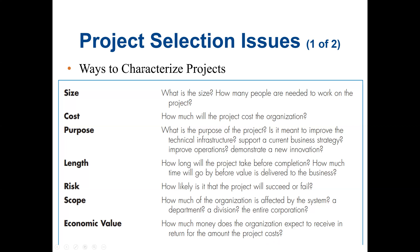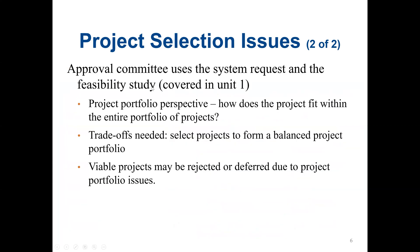Project selection issues also address the feasibility studies, which were covered in previous lectures. We need to do a feasibility analysis on technical issues, organizational issues, and economical issues. Those three feasibility studies cover almost all the categories here. The approval committee uses the system request and the feasibility study in making its decisions.